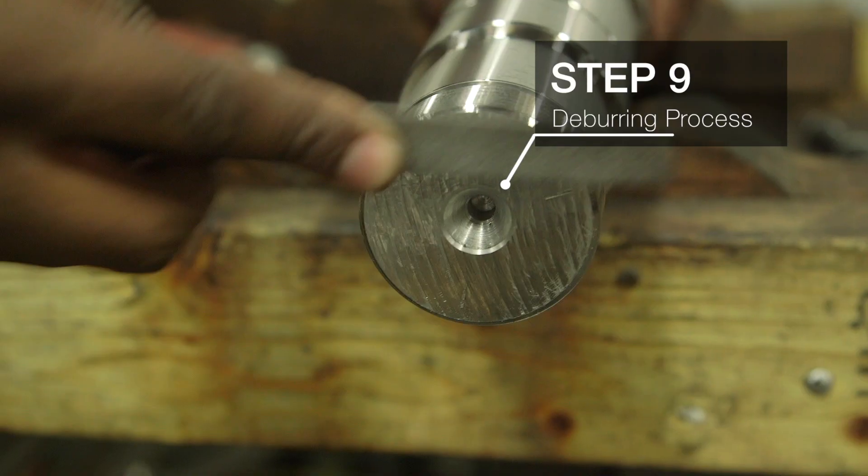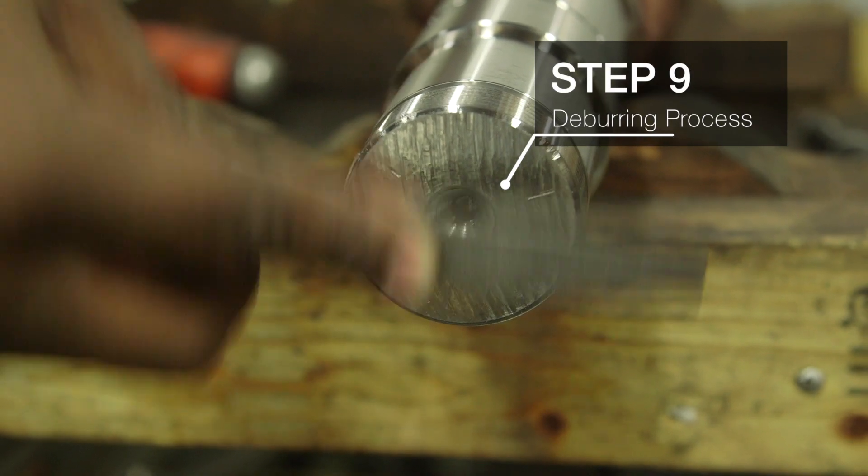Hand deburring is then used to ensure quality and precision by creating an even smoother finish.